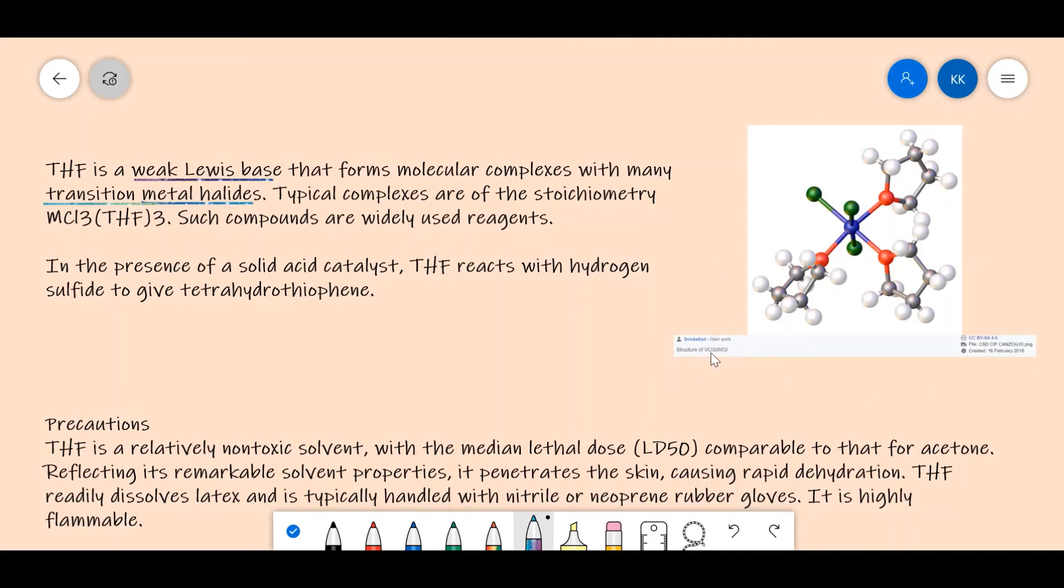Here we have the structure where the metal M is vanadium. This whole molecule is VCl3(THF)3, so this is a coordination structure. In the presence of solid acid catalyst, THF reacts with hydrogen sulfide to give tetrahydrothiophene. So you can see that it is also a very important compound in coordination chemistry.